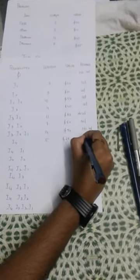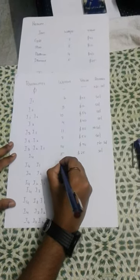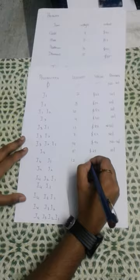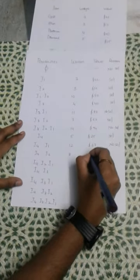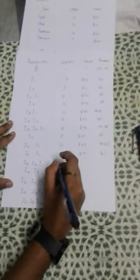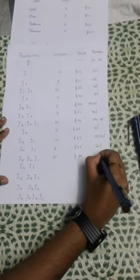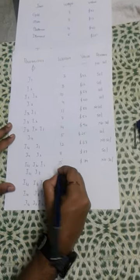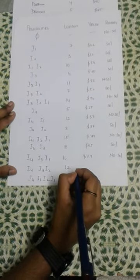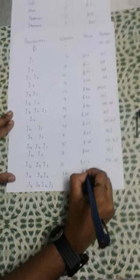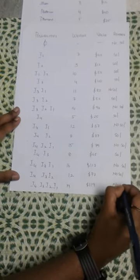For i4, the weight is 5 and value is 25 — it has a solution. For i4 and i1, the weight is 12, exceeding the maximum capacity, and the value is 67, so no solution. For i4 and i2, the weight is 8 and value is 37 — it has a solution. For i4, i2, and i1, the weight is 15, exceeding the maximum, so no solution. For i4 and i3, the weight is 8 and value is 65 — it has a solution. For i4, i3, and i1, the weight is 16 and value 117, exceeding capacity, so no solution. For i2, i4, and i3, the weight is 12, exceeding capacity, so no solution. The last possibility has weight 19 and value 119, which also exceeds the maximum, so no solution.